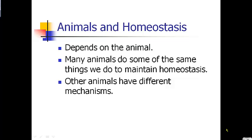Do animals do homeostasis? Absolutely — and even plants do homeostasis. Many animals do the same things we do. For instance, a bear will grow thicker fur in the winter to keep warm and shed fur in the summer to stay cooler. Your dog is the same way — adding fur in winter and shedding in summer to regulate body temperature. Your dog will also pant in order to cool down, because dogs don't have sweat glands. So when a dog gets hot, it pants to try to bring its body temperature back into alignment.